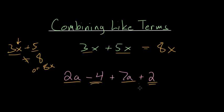And we can combine the terms that are alike. So 2a plus 7a we can rewrite that as 9a and then you have minus 4 plus 2, negative 4 plus 2 would be minus 2. So this expression here would simplify into 9a minus 2.